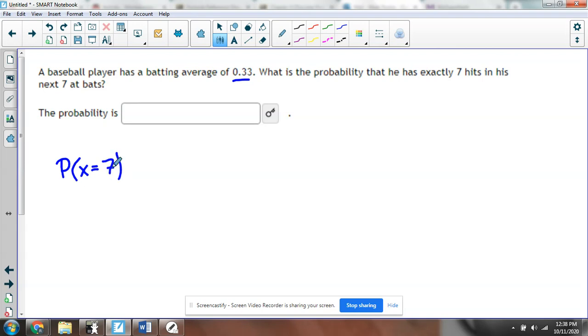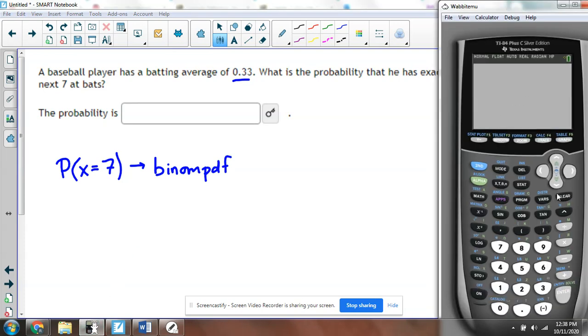When you're looking for an exact value, that's going to signify that we're going to use the binomial PDF function in our calculator. So the first thing I'm going to do is take my calculator and go to the distributions menu, which is above this bars button, so I'll hit second distributions. If you scroll down, you'll see binomial PDF. That's for exact specific values.